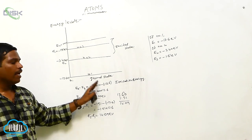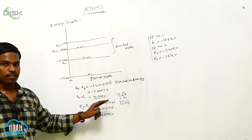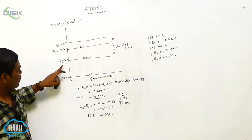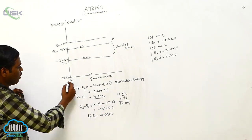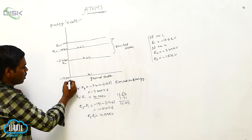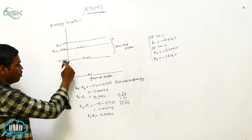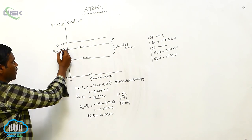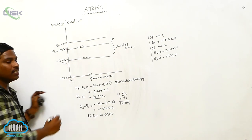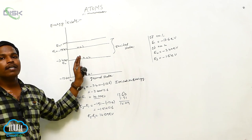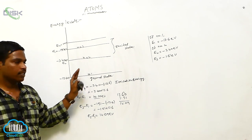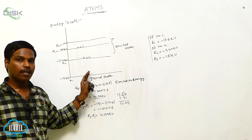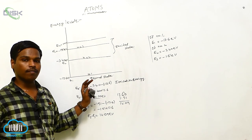These are the energy levels of the Bohr atom. As the level number increases from 1, 2, 3, 4 and so on, the energy of the levels is decreasing.